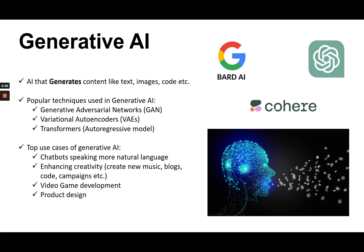Enhancing creativity is another top use case right now. A lot of people are using tools like ChatGPT and Google Bard AI to create new music based on certain properties and genres, write blogs, and developers are writing code and improving their existing code. They are also debugging issues, as well as generating new marketing campaigns and getting ideas. These are some of the ways generative AI enhances creativity.